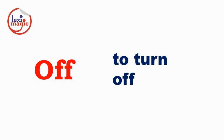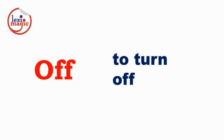Off in the first sense means to turn off. For example, he switched off the light as he walked out of the room. Off in the second sense means to become activated. For example, the alarm went off at 6 o'clock. The bomb went off creating a lot of damage.